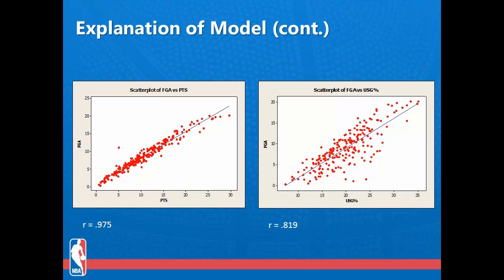These graphs highlight that the variables are highly correlated. For example, field goals attempted and points have an R value of .975, while field goals attempted and usage rate has an R value of .819. Also, minutes played and games started squared has a .791 R value. These high correlations further highlight the multicollinearity issues in our model.